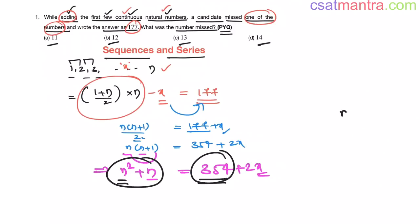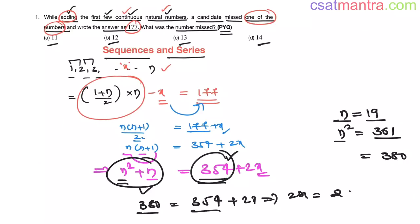Now let us try with n as 19, because 19 squared is 361, this is near to 354. So this can be one of the possibilities. So n squared plus n, 361 plus 19, that is 380. So this value 380 equals 354 plus 2x. 2x equals 380 minus 354, that is 26. Now x is 13. 13 is there in our options. So our answer is C.